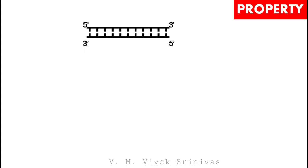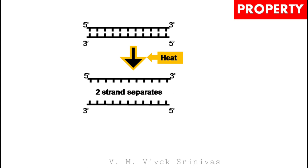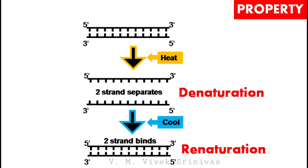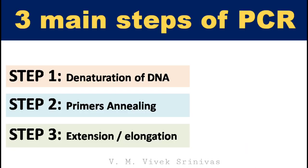One of the properties of double-stranded DNA is that at high temperature, the two strands separate — that is denaturation. At low temperature, the two strands anneal to each other — that is renaturation. There are three main steps of PCR: denaturation, annealing, and extension.